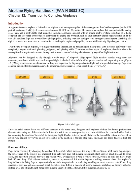Airplanes can be designed to fly through a wide range of airspeeds. High-speed flight requires smaller wing areas and moderately cambered airfoils, whereas low-speed flight is obtained with airfoils with a greater camber and larger wing area. Many compromises are often made by designers to provide for higher-speed cruise flight and low speeds for landing. Flaps are a common design effort to increase an airfoil's camber and surface area for lower-speed flight. Camber is the asymmetry between the top and the bottom surfaces of an airfoil. One method for varying an airfoil's camber is the addition of trailing edge flaps, which engineers call a high-lift system.